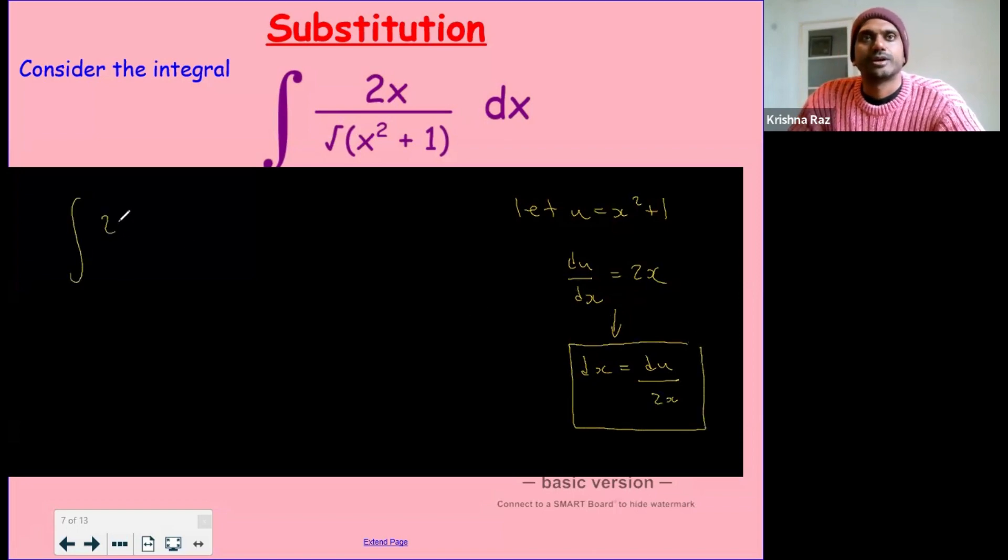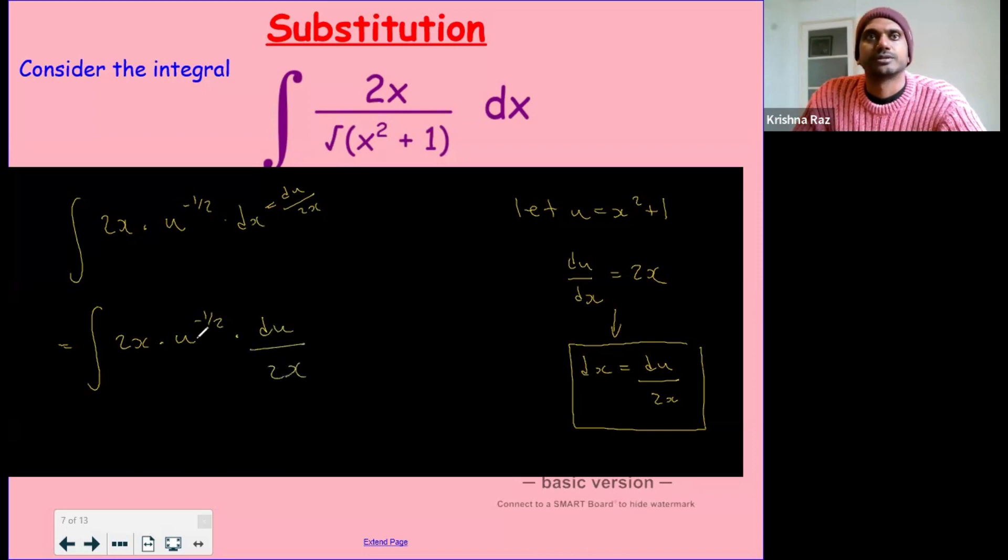So what we have is the integral of 2x times u to the minus a half dx. But we want it in terms of u and dx is du over 2x. So this becomes the integral of 2x times u to the minus a half times du over 2x. Suddenly, the x is cancelled and it is just in terms of u, which is easier.